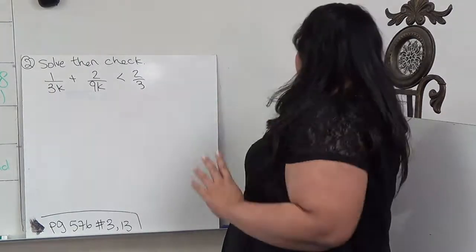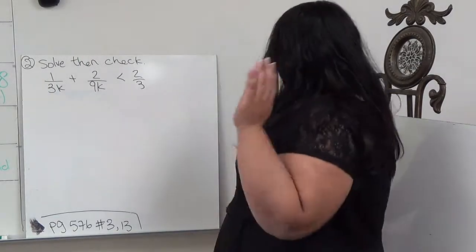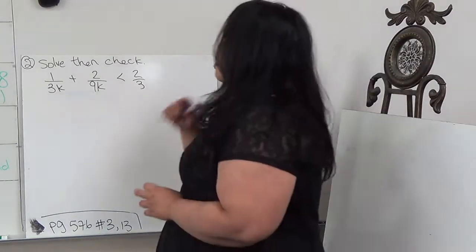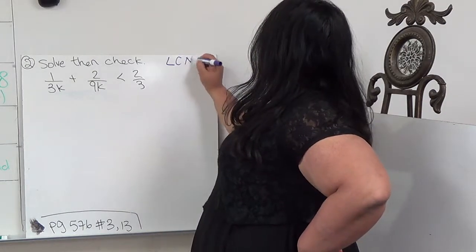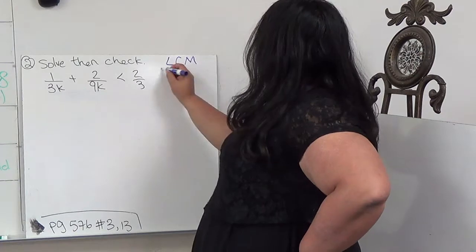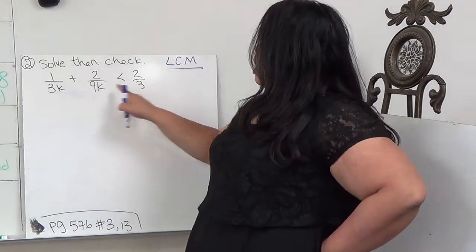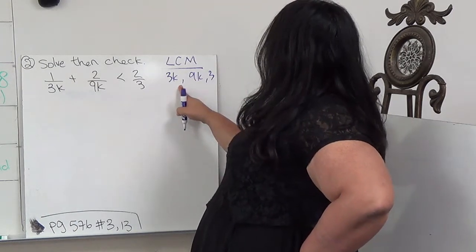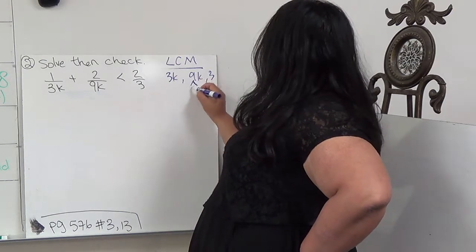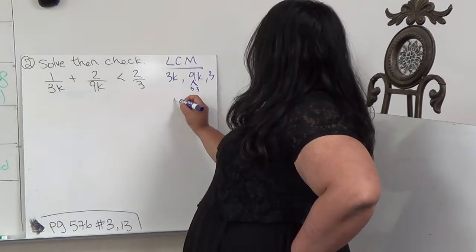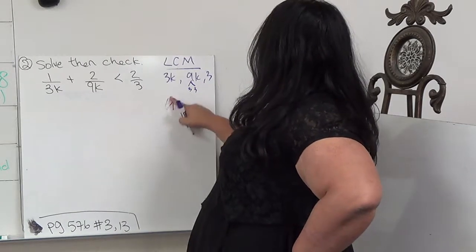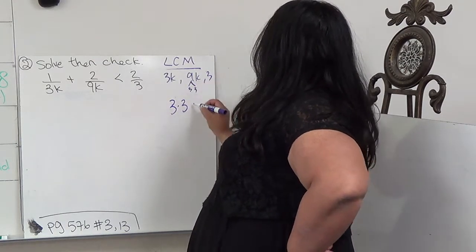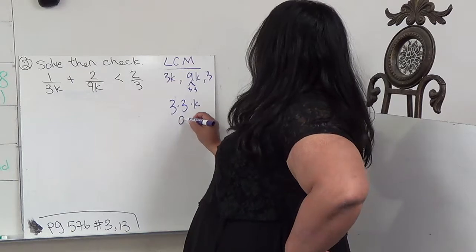Okay. So this one is inequality, which uses the same rules. But remember, the only difference is if I multiply or divide by a negative, I have to flip the sign. So, the same thing. This LCM should be a little easier than those equations. We have 3K, 9K, and 3. So I need the highest. This is the same thing as 3 squared. I need two 3s because this is 3 squared, and then 1K. So my LCM is 9K.